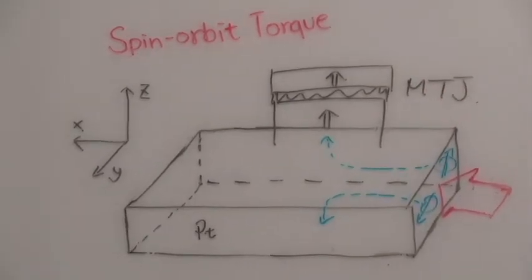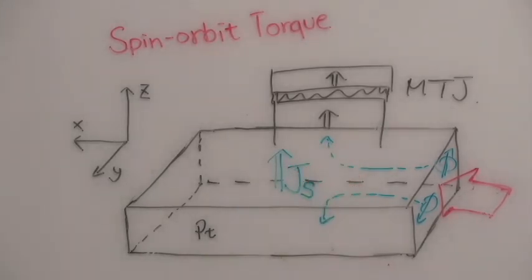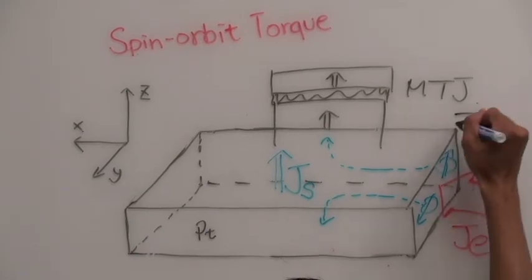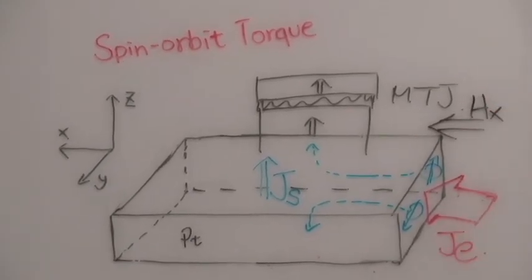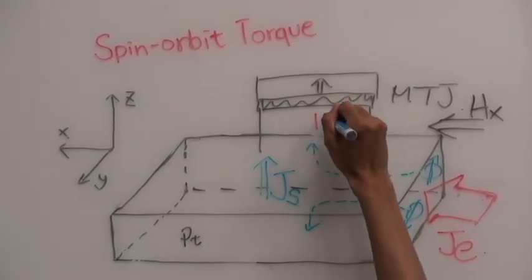So, we can take advantage of this phenomenon to generate pure spin current by electric current. And with the assistance of the in-plane magnetic field, we can switch the magnetization of the free layer from up to down.